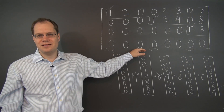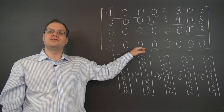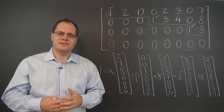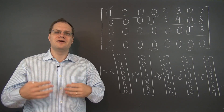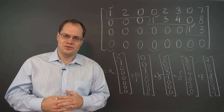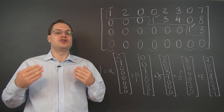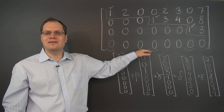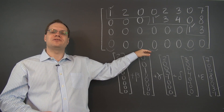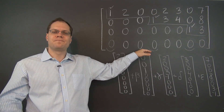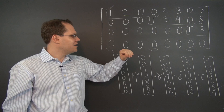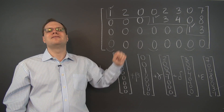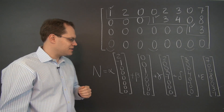Determining the null space from the row-reduced echelon form is so easy you can teach a computer to do it, and that's a very good standard for an algorithm. If an algorithm is so precise that you can translate it into code, then it's a good algorithm. Determining the null space from the row-reduced echelon form certainly lives up to that standard.